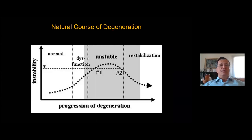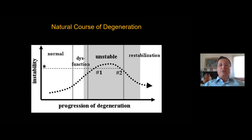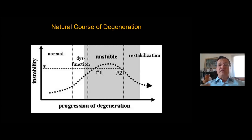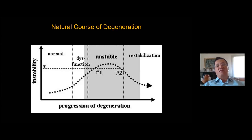These are the phases over time: dysfunctional phase, unstable phase, and restabilization phase. Your treatment will depend on which phase the patient is in. In recent cases there may be different levels involved — one level unstable, another in the restabilization phase.